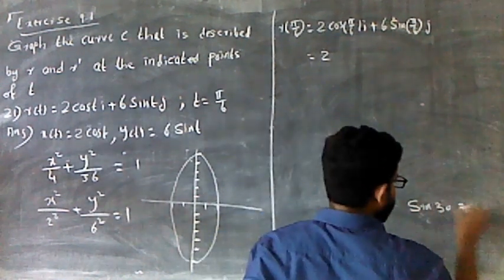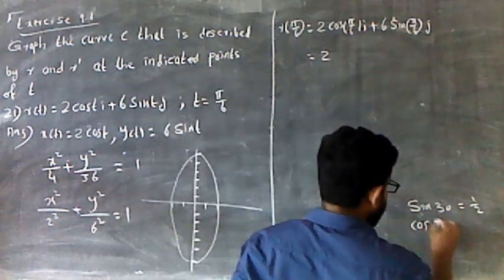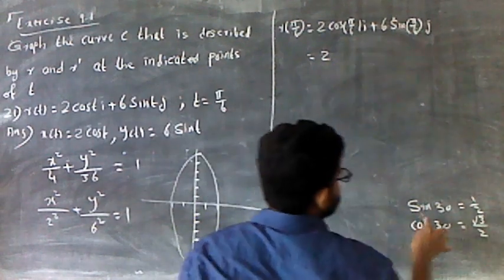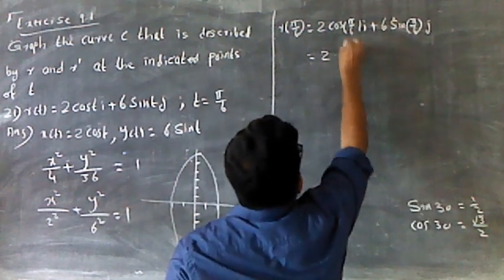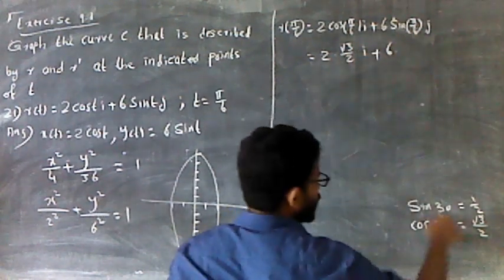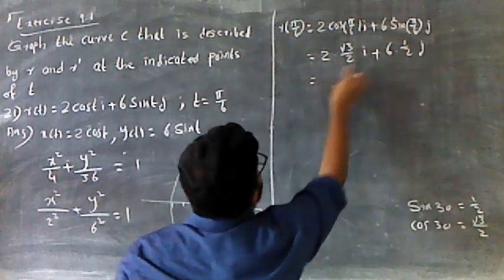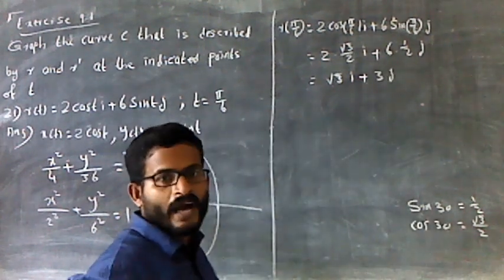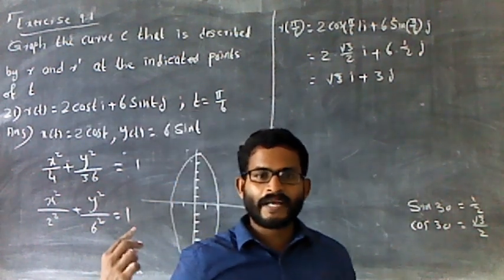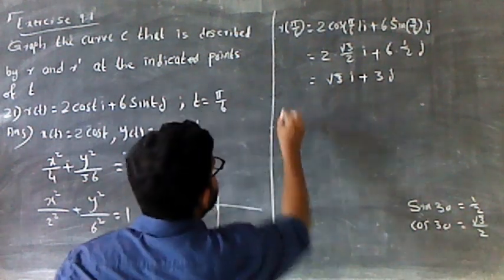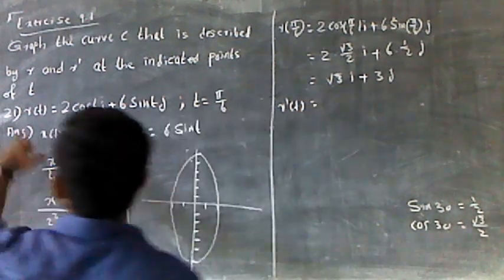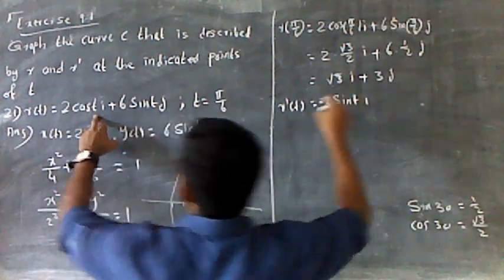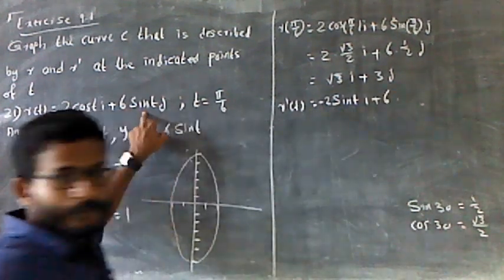cos sin 30, 1.0. Cos 30 gives 2·3·2. Plus 6 sin 30, 1.0·2. R of 5π/6 is not R dash of 5π/6. R dash of t is equal to minus 2 sin t i plus 6 cos t j. R dash at t = π/3 is equal to minus 1.0 plus 6 sin 30, 2.0·2 cos t.